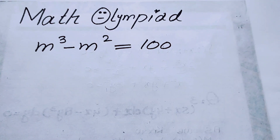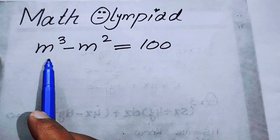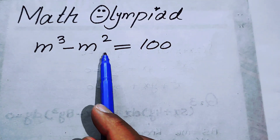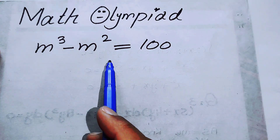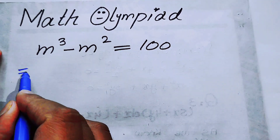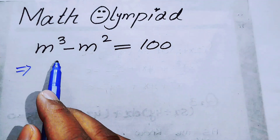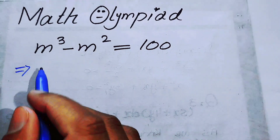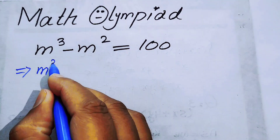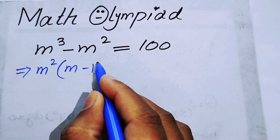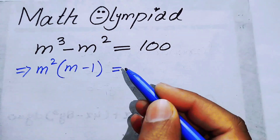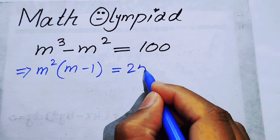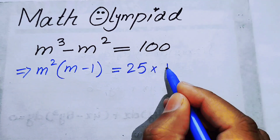Hello everyone, welcome back to the Map of Mathematics. In this video we are going to solve m to the power of 3 minus m squared equals 100, and we will solve this problem for the value of m. The first thing we are going to do is take m squared as a common factor on both terms on the left-hand side, so it becomes m squared times of m minus 1 equals 100, and we can write 100 as 25 times 4.